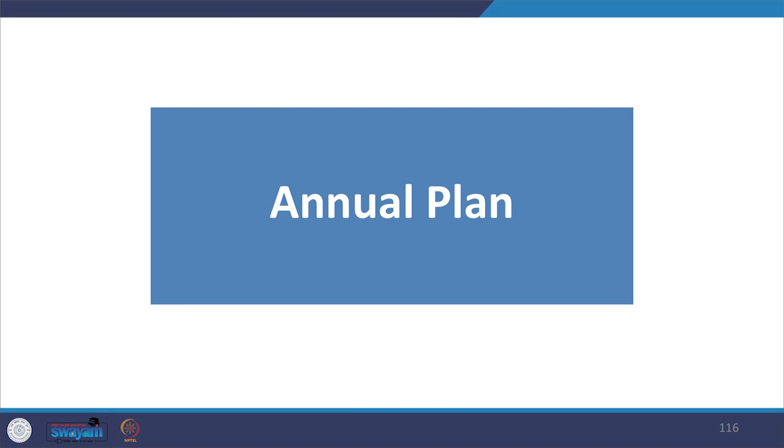Now let us look at the annual plan. The purpose of the annual plan is to translate the development plan in the context of annual physical and fiscal resource requirements and to monitor plan implementation with performance milestones. We continuously need to check how we are moving towards our development goals, looking at the investment plan, audit and monitoring plan. An annual plan provides detail of new and ongoing projects that the local authority intends to implement during each financial year, to see how funding is used and from where funding can be arranged, and for monitoring project performance against timelines and expected deliverables.